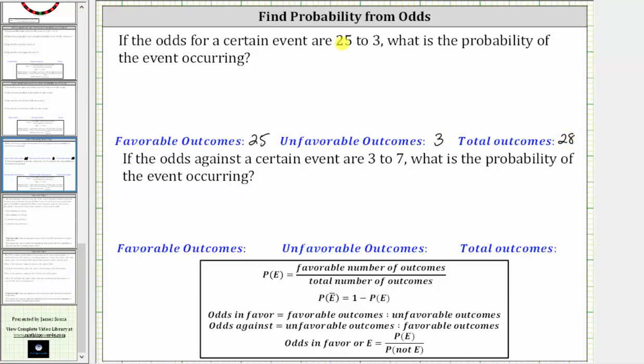And now remember, the probability of an event is equal to the favorable number of outcomes divided by the total number of outcomes. So if we call the event E, the probability of event E is equal to 25 divided by 28, or 25/28.